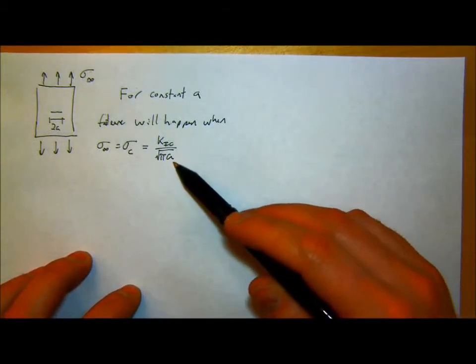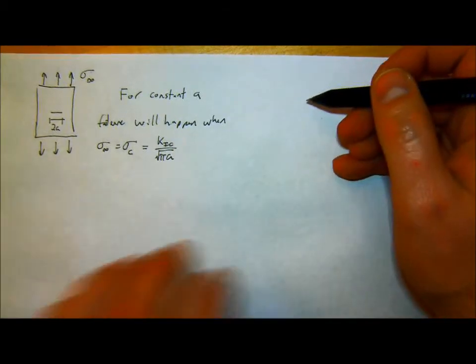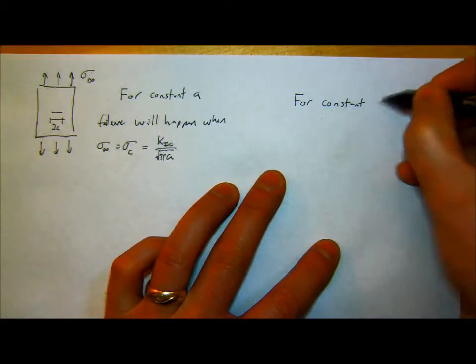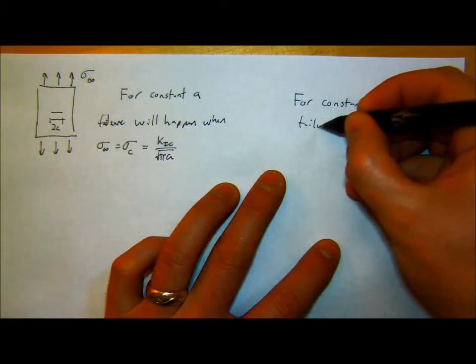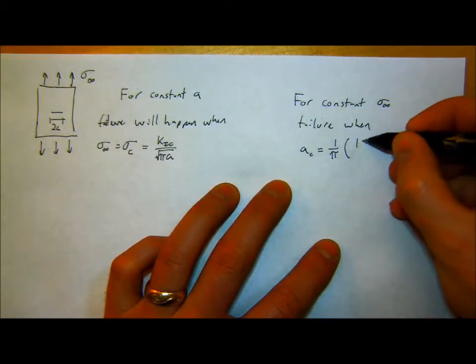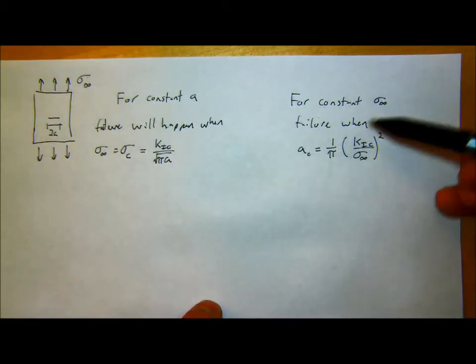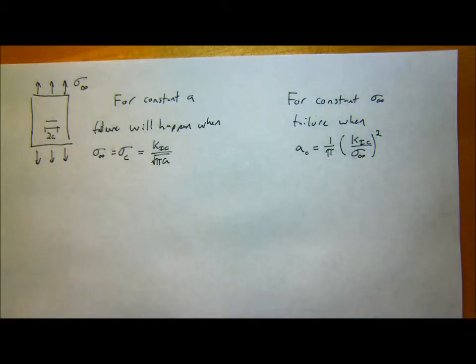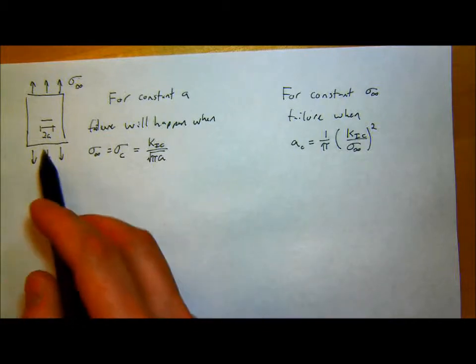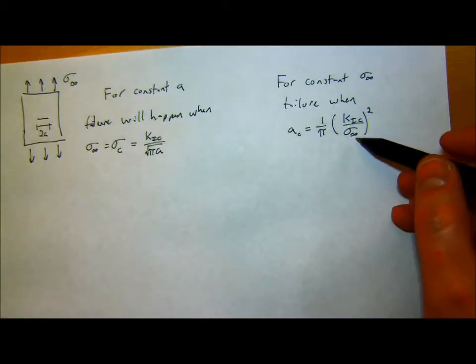So if I know what the size of the cracks in my material are, what the biggest flaw is in my material, I know how much stress I'll have to apply to cause fracture to happen. And that is then a material property. For a constant given applied stress, failure will happen when A critical is equal to 1 over pi K1C over sigma infinity squared. So now this is, if I apply a certain stress, this is how big of a flaw I can have before my material will break. And so now that K1C varies material to material, and this kind of sets the limit of how big of a flaw I can have for a certain material size, or how much stress I can apply.